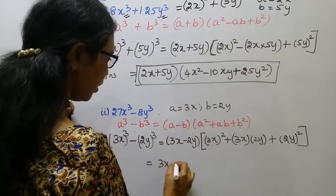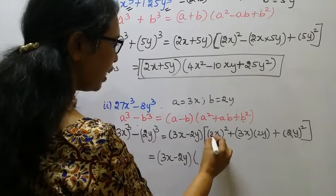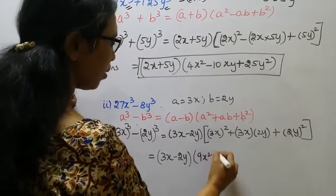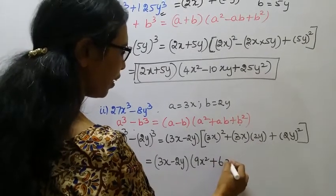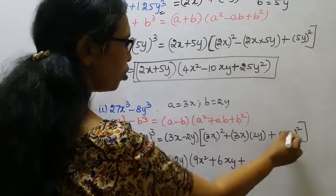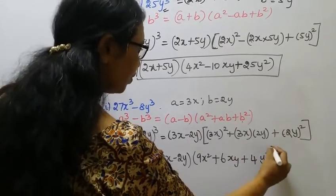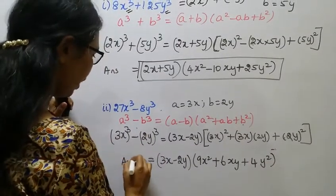(3x - 2y)(3²=9x² + 3×2=6xy + 2²=4y²). This is the second subdivision answer.